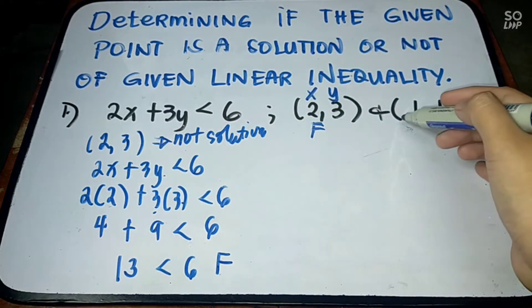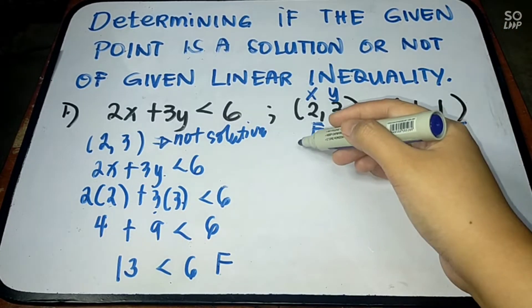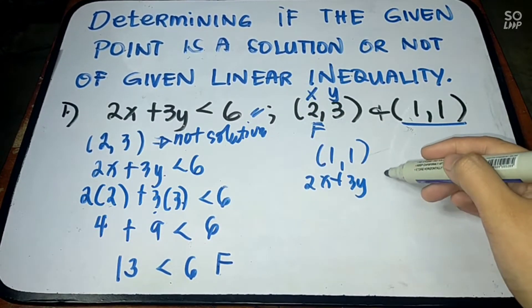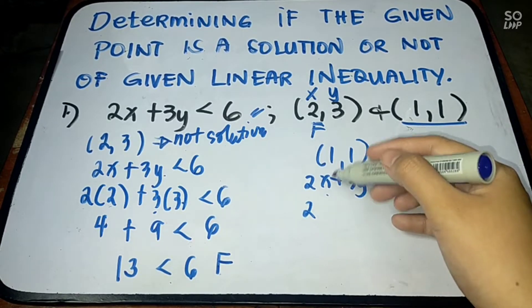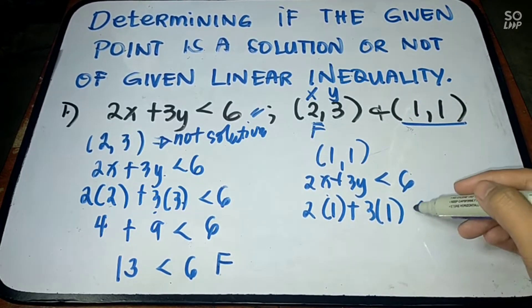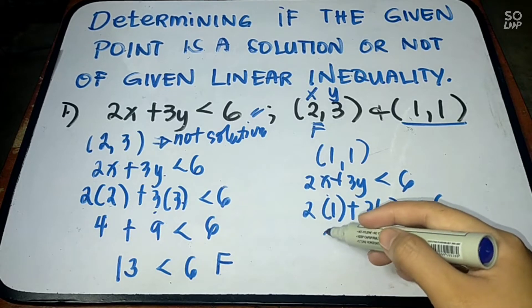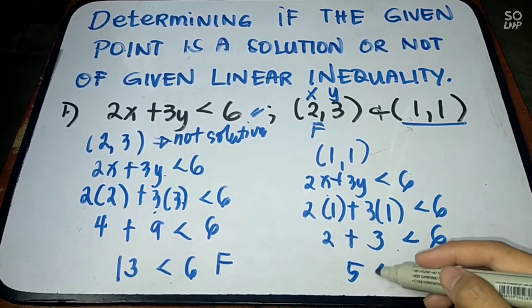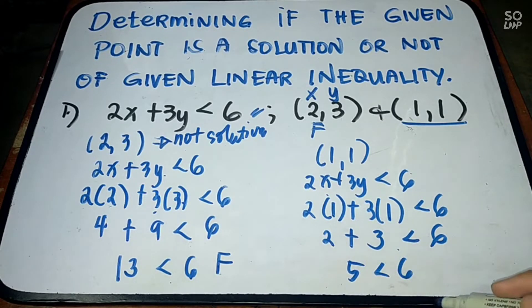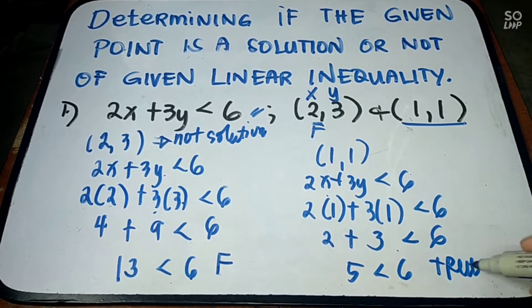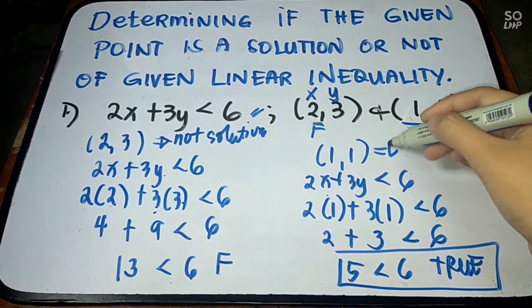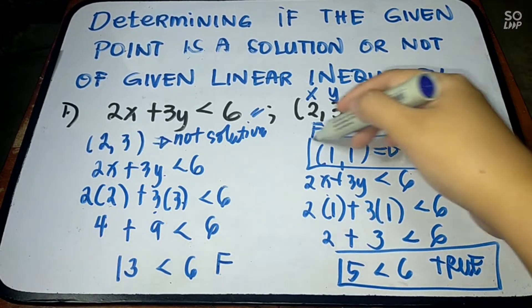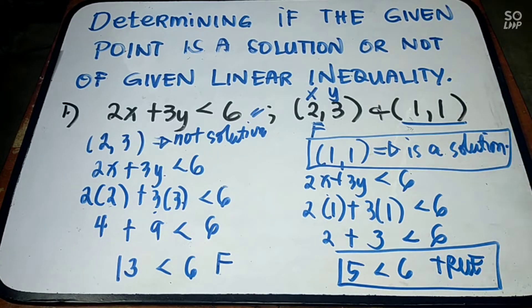Next, let us have (1, 1). Let us try if (1, 1) is a solution. We have 2x plus 3y less than 6. Substituting: 2 times 1 plus 3 times 1 less than 6. That gives us 2 plus 3 less than 6, so 5 less than 6. Is 5 less than 6? Yes, that is true. Therefore, (1, 1) is a solution of this linear inequality. That is how you test if a given point is a solution or not.